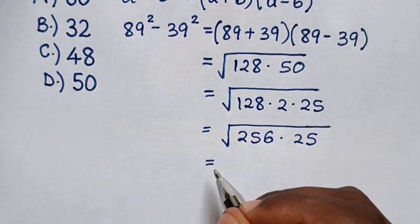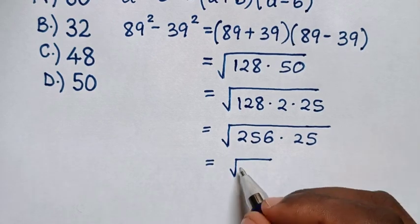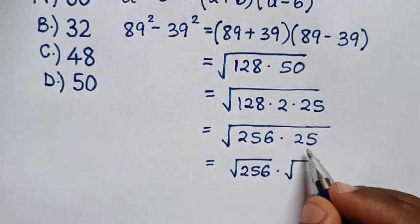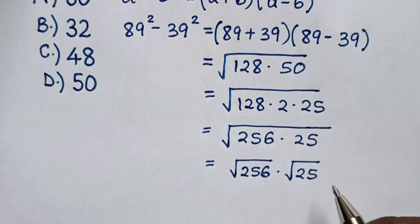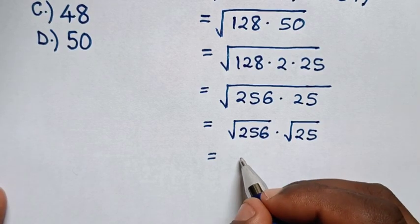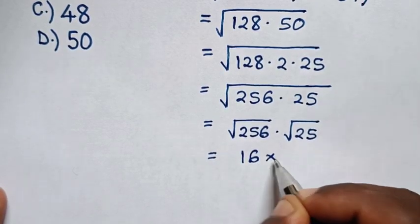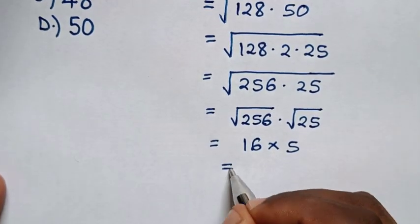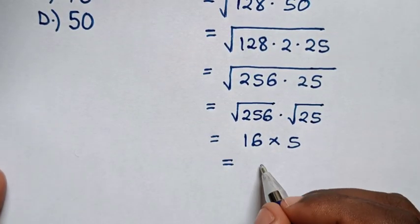Then, it will be equal to square root of 256 times square root of 25. So, it will be equal to 16 times 5 is 80.